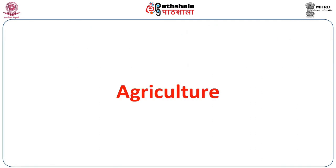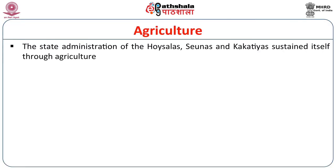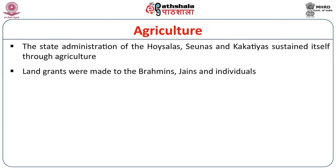I would like to emphasize agriculture and its background during the three dynasty period. Agriculture was the main source of livelihood for the people. It was mostly the kings who paid keen interest in the development of agriculture. The state administration of the Hoysalas, Sonas, and Kakathias sustained itself through agriculture and its products. Land grants were made to Brahmins, Jains, and individuals, and these land grant donations brought many uncultivable lands into cultivation.